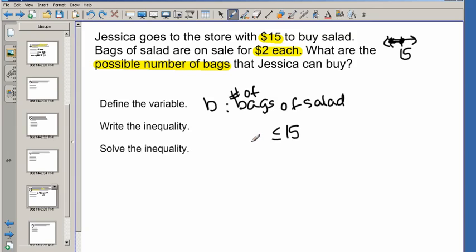So that means I'm going to be multiplying the number of bags that she's buying by 2. So basically, 2 times the number of bags must be less than or equal to $15. So how are we going to solve it? We're going to divide both sides by 2, and I'll end up with B is less than or equal to $7.5. So what are the possible number of bags that she can buy? Anything less than $7.5.